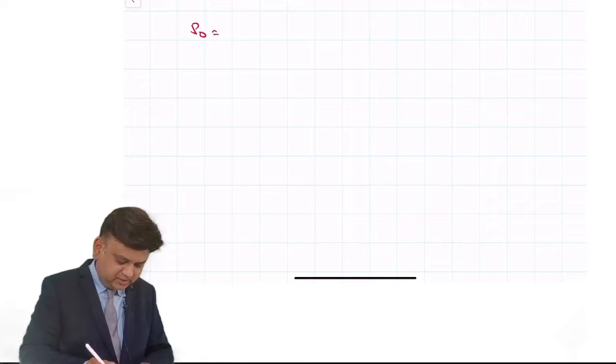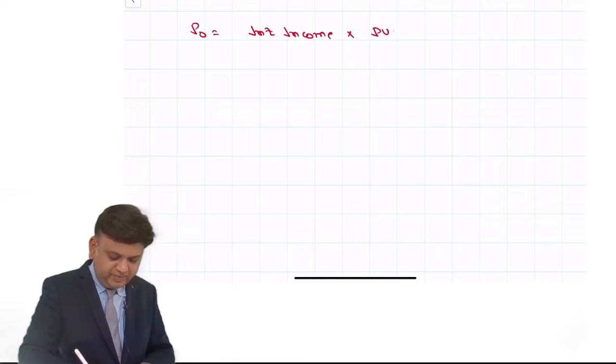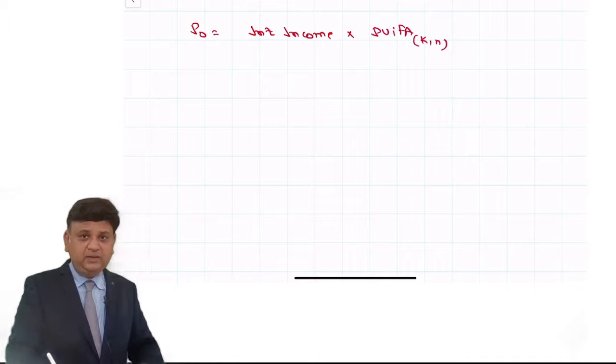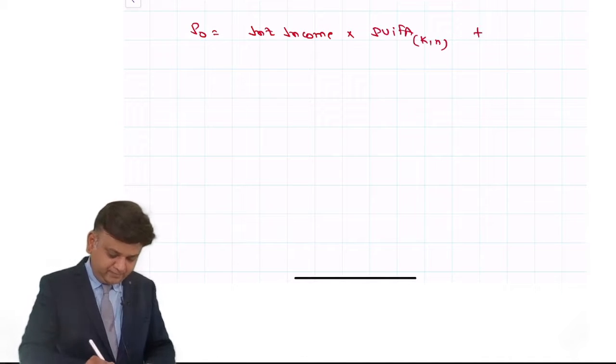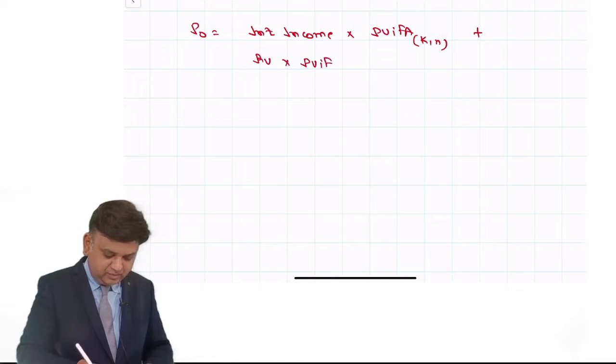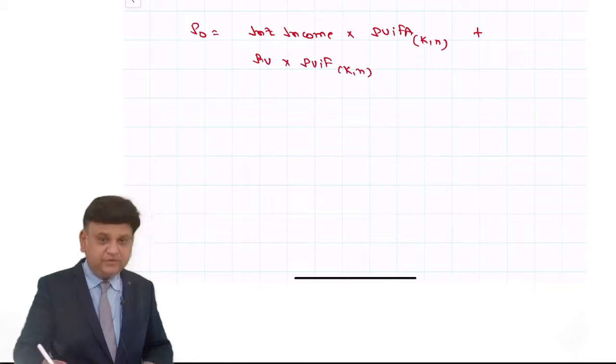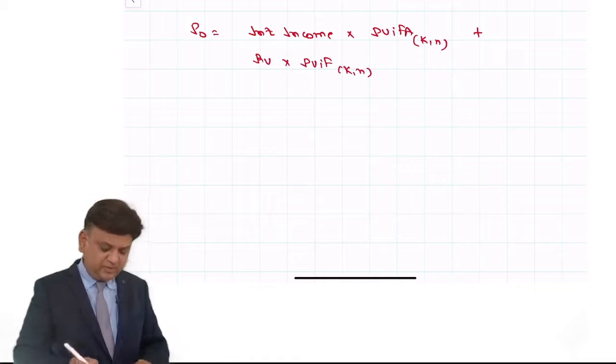P0 is equal to interest income into PVIFA at k cost of capital for n number of periods, plus redemption value into PVIF at k cost of capital for nth period. That is the way we are required to do the answer.